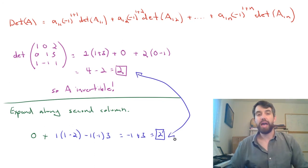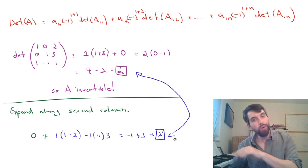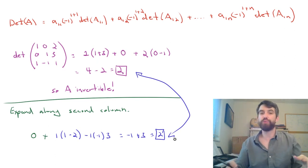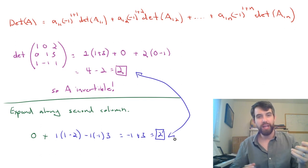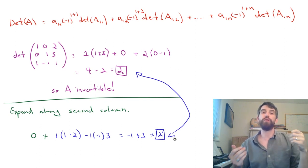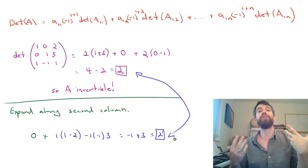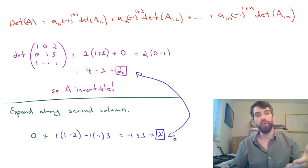And this always happens. You can expand along any row or any column using this process and you'll get the same value for the determinant. That determinant tells you whether your matrix is invertible depending on whether the determinant is non-zero or equal to zero.